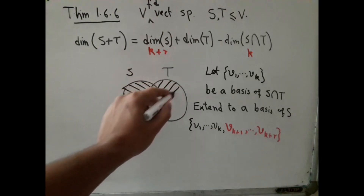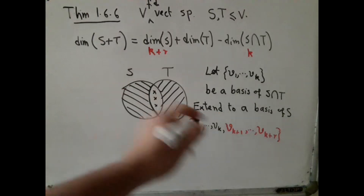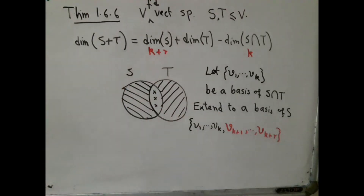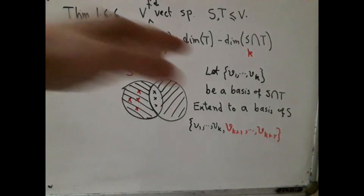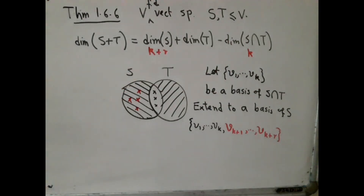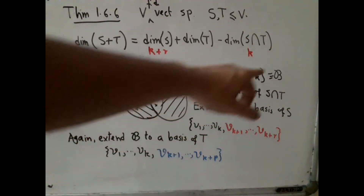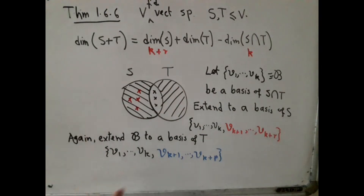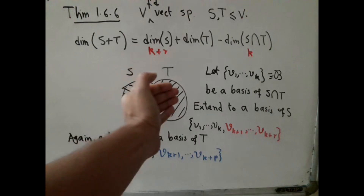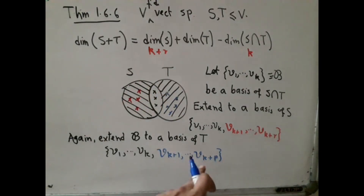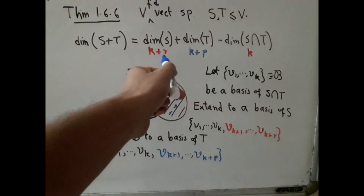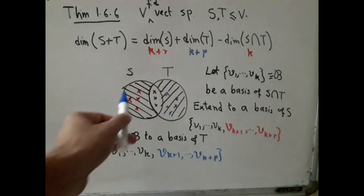Now my aim is to do the same thing for T. I will extend the basis of S intersection T to a basis of T as well, because those K vectors are linearly independent and are also part of T. The new vectors added for T clearly cannot be inside S intersection T, so they are somewhere in the T-only region. So I again start from the same K basis vectors and grow them into a basis of T by adding new vectors. The dimension of T is then K plus P.